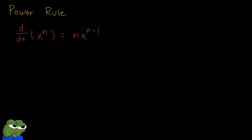The first actual rule we're going to learn is the power rule. The power rule is applicable when you have your variable raised to a certain constant. All it's essentially saying is: you bring down the exponent — you multiply the whole thing by the exponent — and then you subtract 1 from the exponent after. You bring this down, and then you subtract 1. That's it.